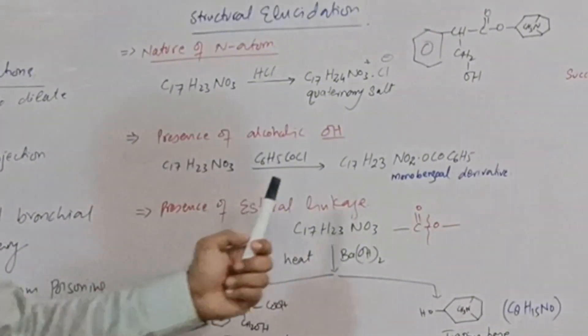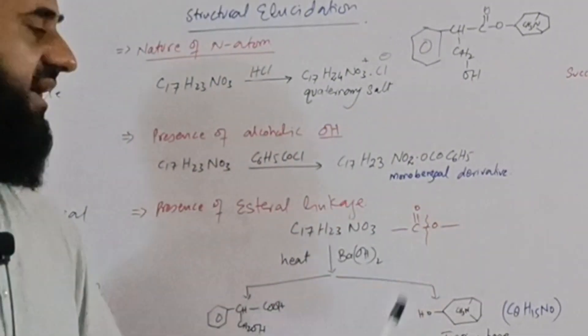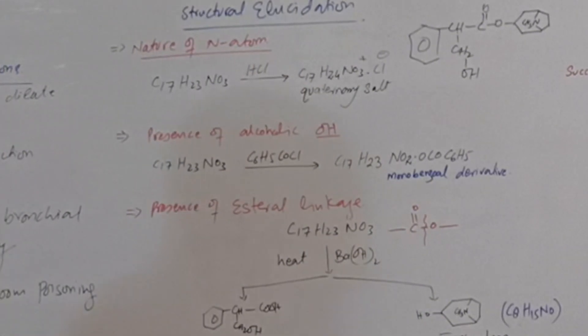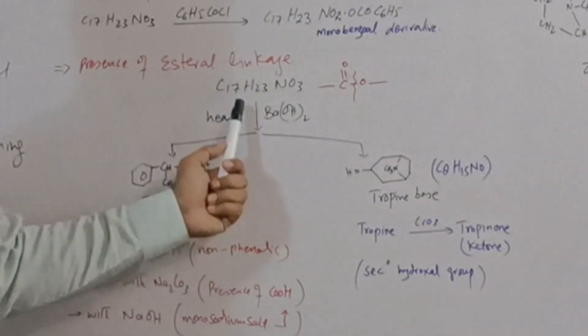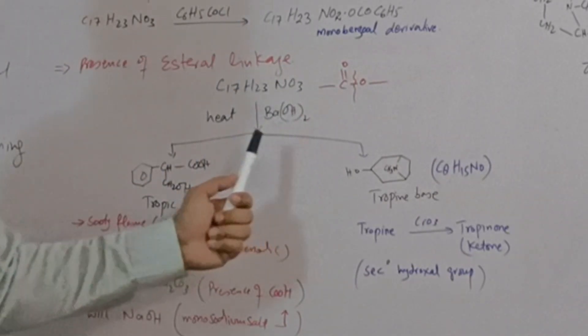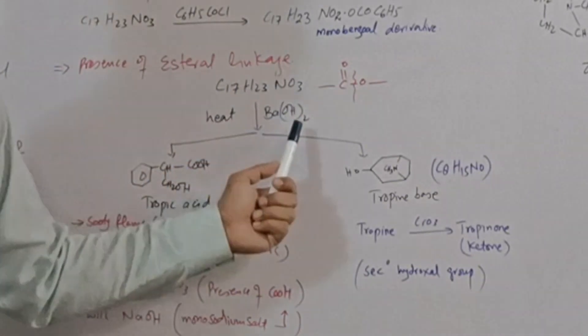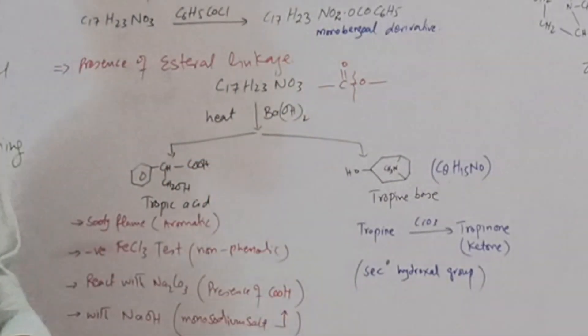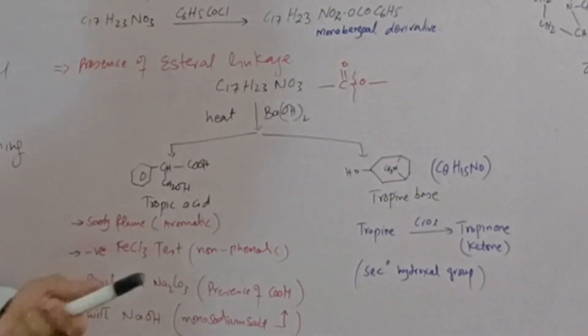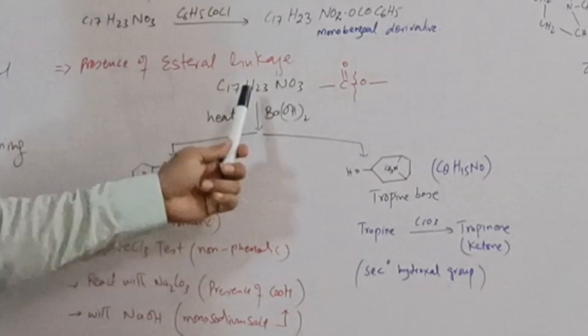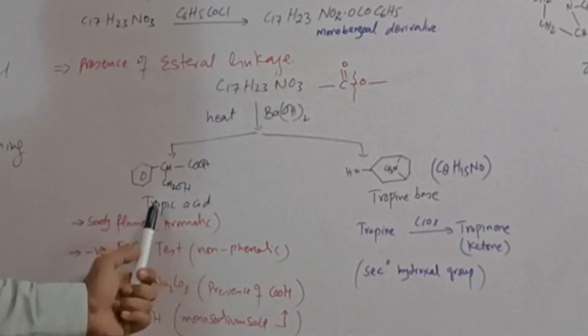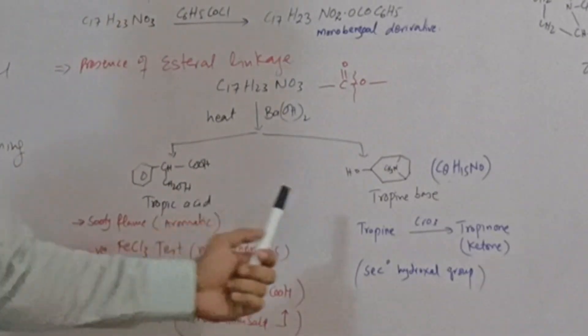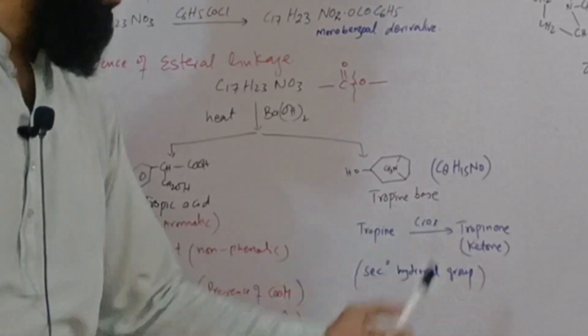The structure shows that there is an ester linkage present. To check whether there is an ester linkage or not, we treat the atropine with barium hydroxide and heat it. As we know that esters are hydrolyzed into their respective acids and alcohols.